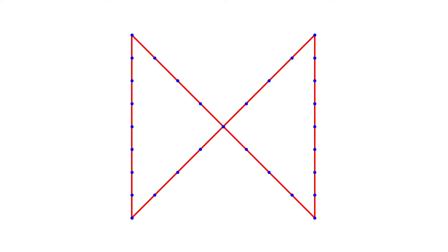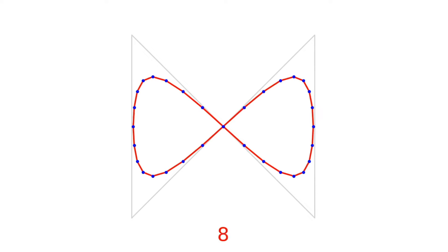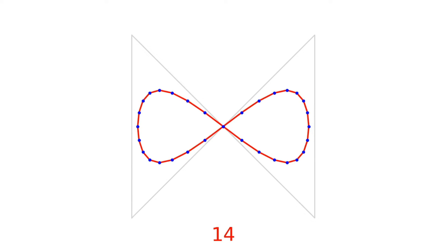We can use the same approach to generate other smooth shapes. For example, let's see what happens if we apply it to this shape. Hey, that's cool. It's an infinity sign.